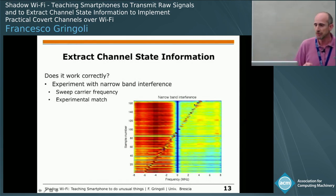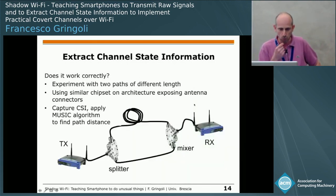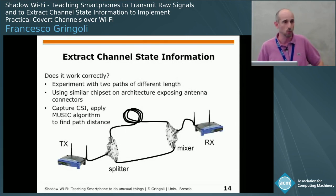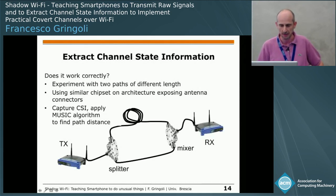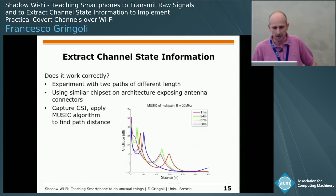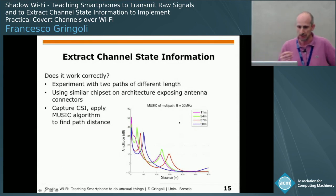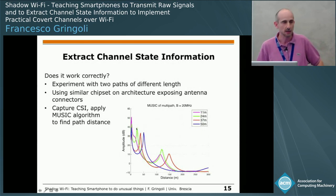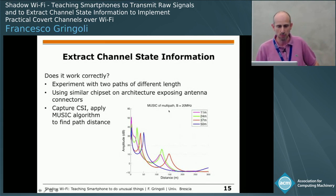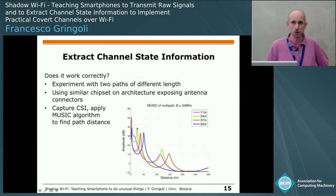We repeated localization experiments used by other tools. We used a version of the chipset that exposes antenna connectors — not on a mobile phone, but necessary to emulate multipath. We used a splitter, two paths of different lengths, a mixer, and a receiver, then captured CSI and applied the MUSIC algorithm to determine the distance between the two paths. By changing the length of the longest path, we perfectly observed the two expected peaks with the correct distance between them. At 20 MHz, the minimum resolvable distance between the two peaks is approximately 20 meters.